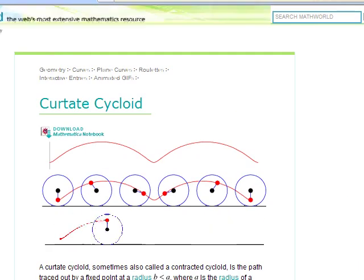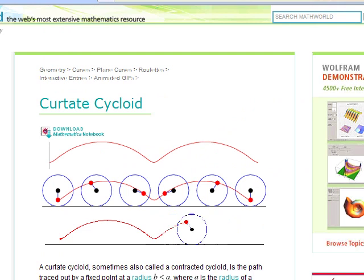Here's the curtate cycloid. Now you see that sort of wavy line instead of the cusp that you saw with the cycloid. Here the pencil is located in the interior of the circle. As the circle moves, it traces out that wavy line. Of course, if the pencil is located right at the center of the circle, it will trace out a straight line.